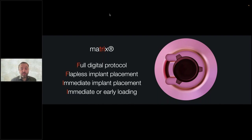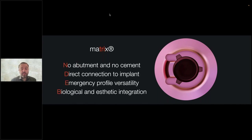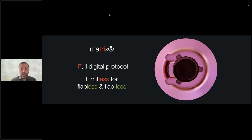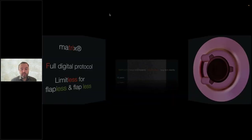We are now in the second year of using the new tissue level matrix implant from TRI, which has allowed us to change our workflow and prosthetic concept while still respecting our biological principles. Matrix supports full visual protocol, flapless implant placement, immediate implant placement, and immediate or early loading. The key advantages: no abutment, no cement — the crown comes straight to the neck of the implant without any intermediate interface, with versatility of the emergency profile due to the concave design.